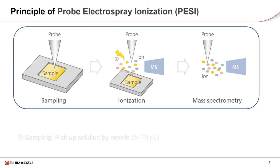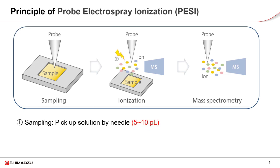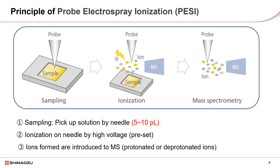This slide further explains how PESI works. Ten microliters of liquid sample is loaded onto a sample plate. The metal needle moves down to pick up 5 to 10 picoliters of the sample each time, and ionization takes place in the high-voltage electrical field. The ions formed are protonated ions in positive mode, or deprotonated ions in negative mode.